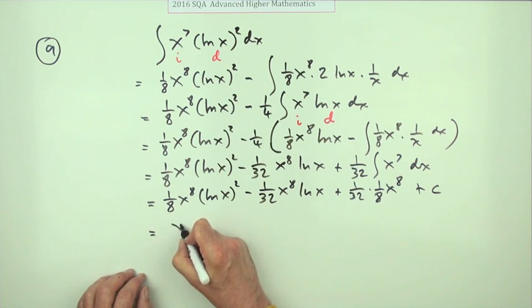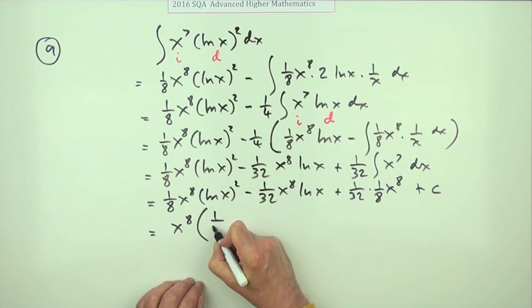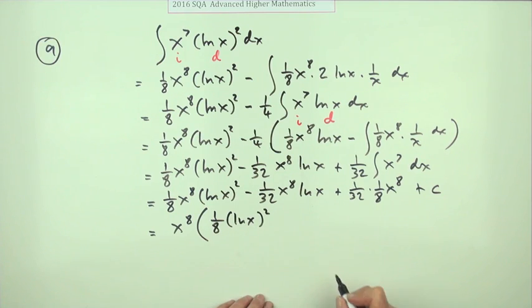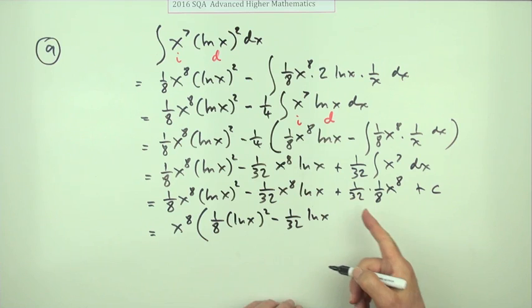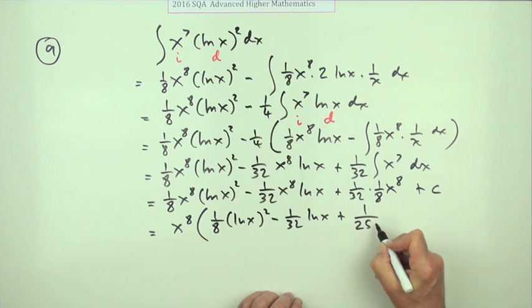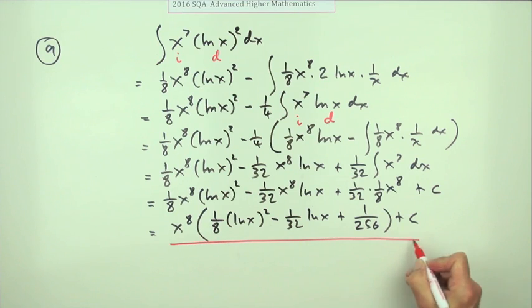I think the only factorization I'll do here is just taking out those x^8s. So taking out x^8, that would leave you with 1/8 ln x squared, 1/32 times ln x, and at the end it's just plus 1/256 + C. So there we have it.